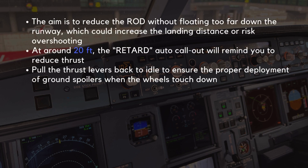The aim is to reduce the descent rate without floating too far down the runway, which could increase the landing distance or risk overshooting. At around 20 feet, the retard auto call-out will remind you to reduce thrust. Pull the thrust levers back to idle to ensure the proper deployment of ground spoilers when the wheels touch down.